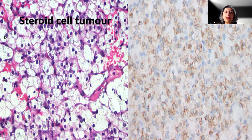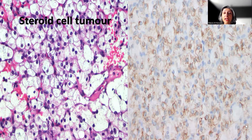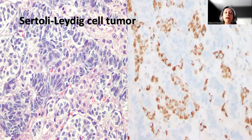Steroid cell tumor is another entity described within the ovary. It shows these large cells with vacuolated cytoplasm, and again it tends to show cytoplasmic granular positivity without nuclear positivity in the tumor cells.